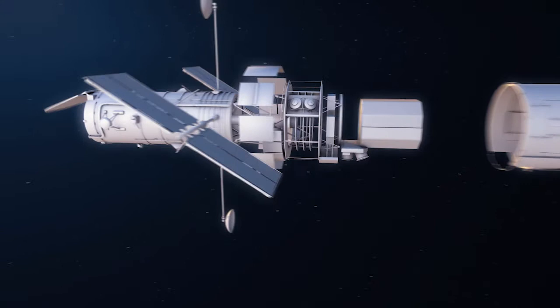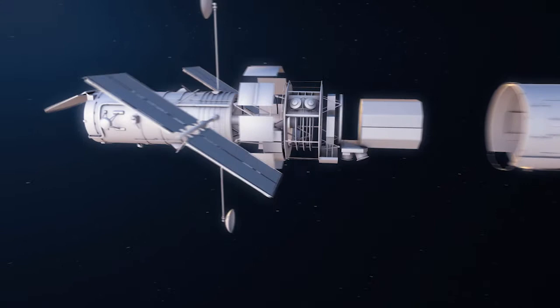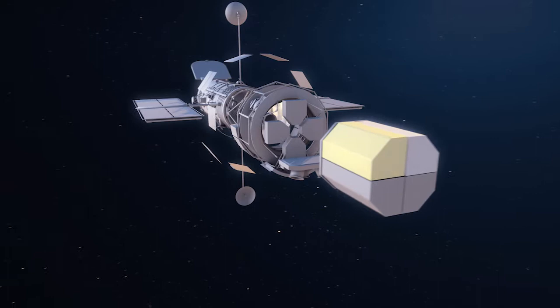Hubble is equipped with two spectrographs: the Space Telescope Imaging Spectrograph, which was installed on the telescope in 1997, and the Cosmic Origins Spectrograph, which was installed in 2009.